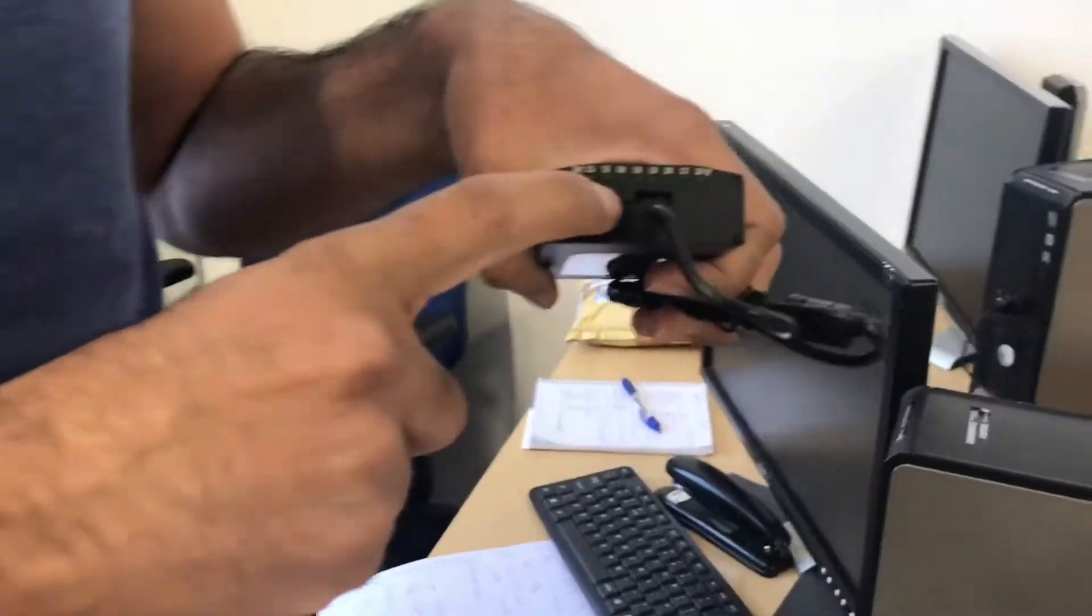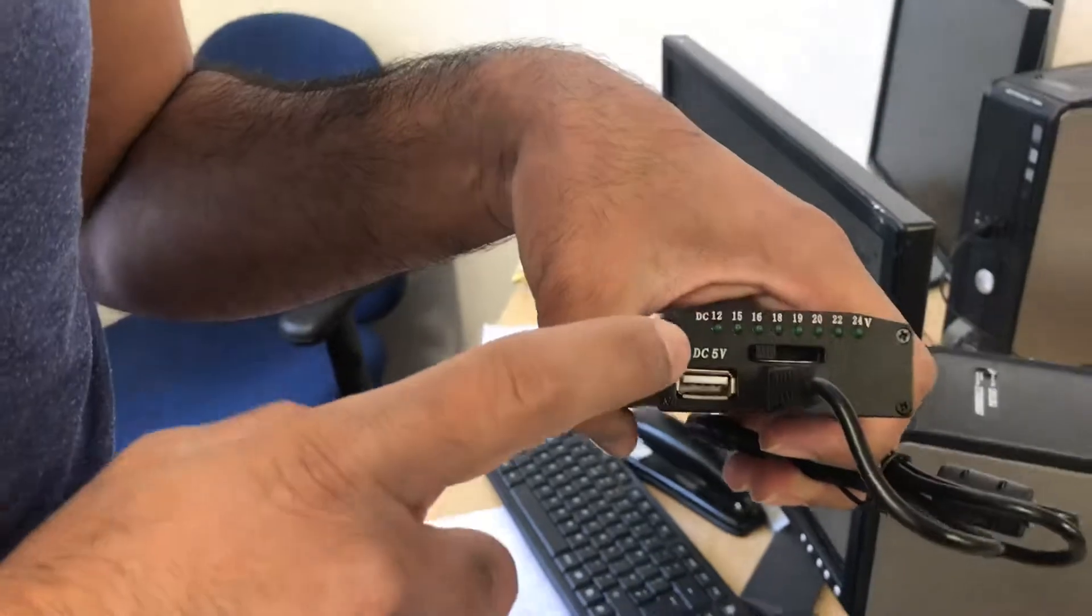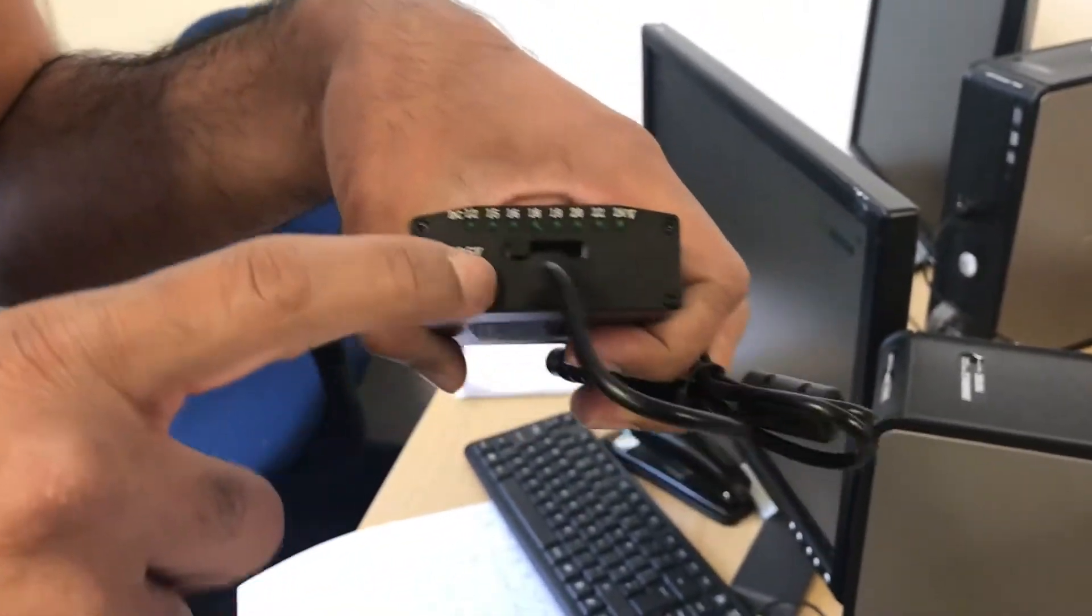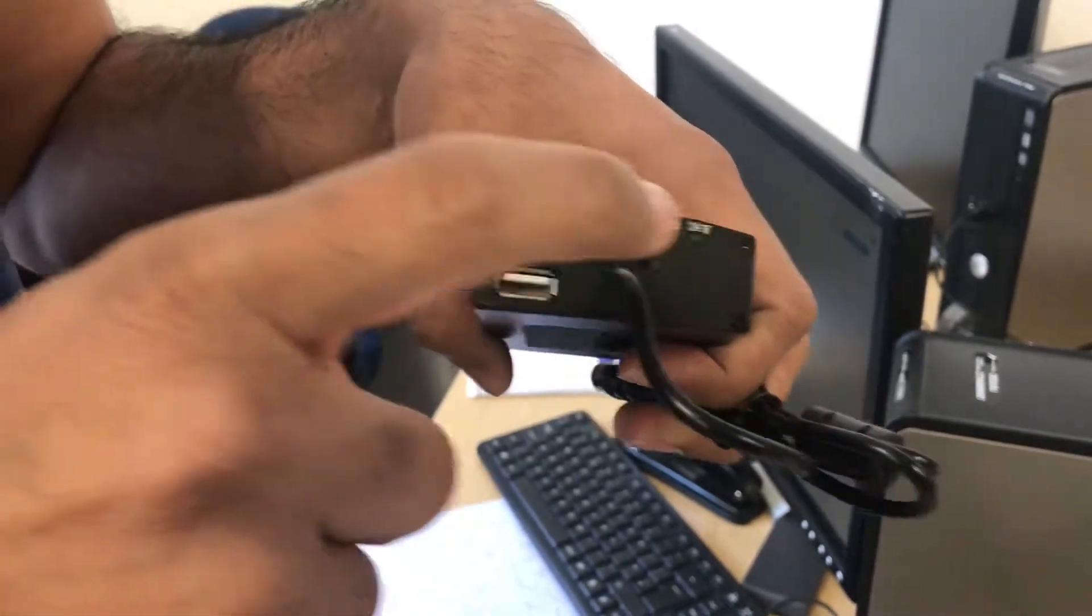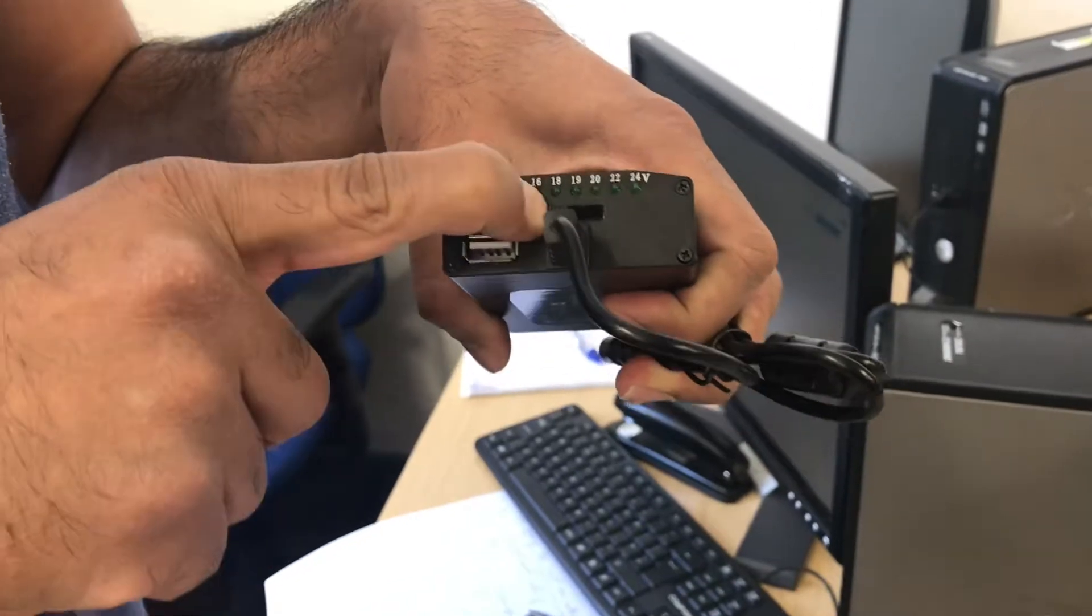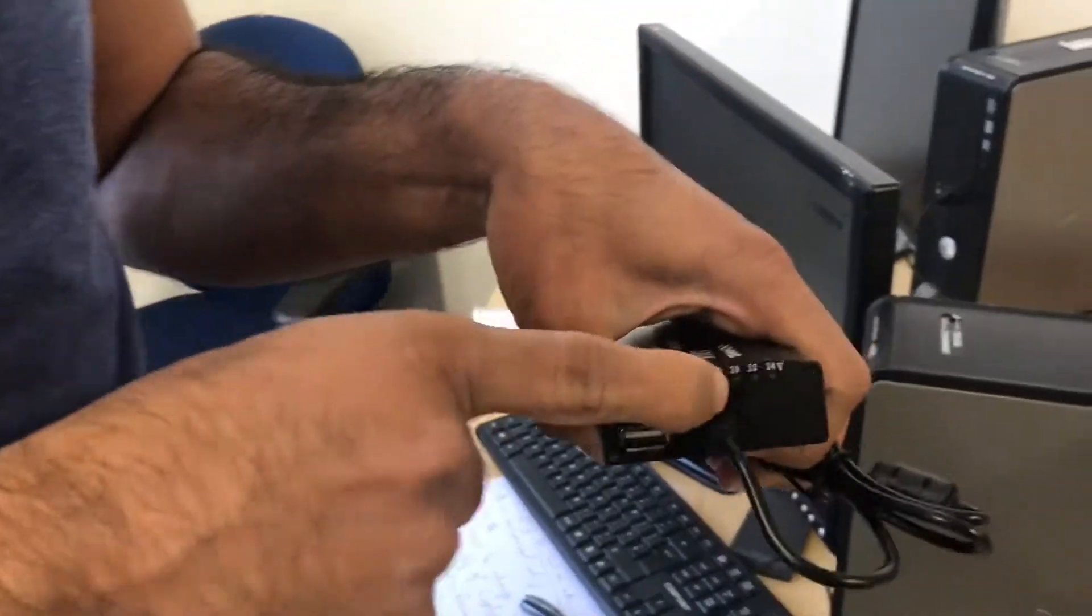There is a toggle switch to select the appropriate voltage for your device, so be careful while you are using this. It's between 12 volt and 24 volt with different intervals: 15, 16, 18, 19, 20, and 22 volt, so please be careful while you're selecting this.